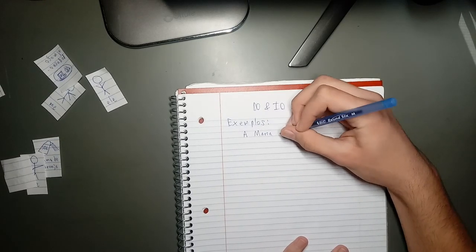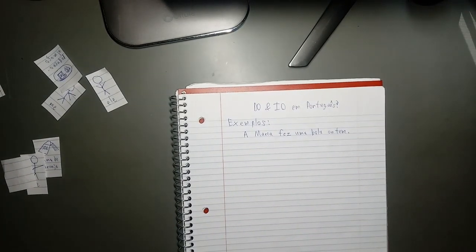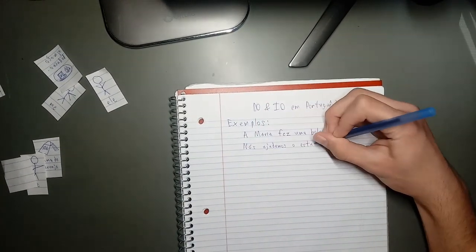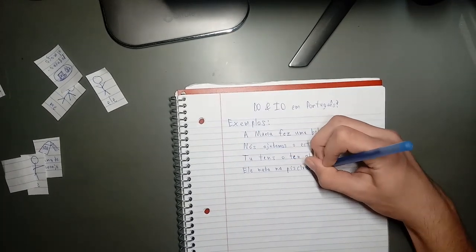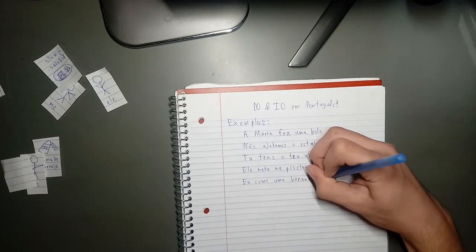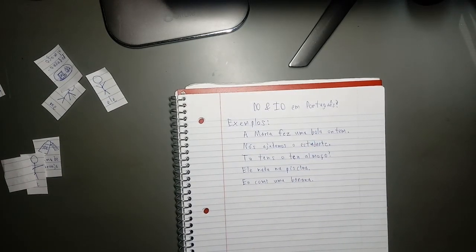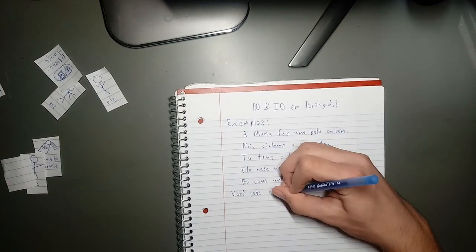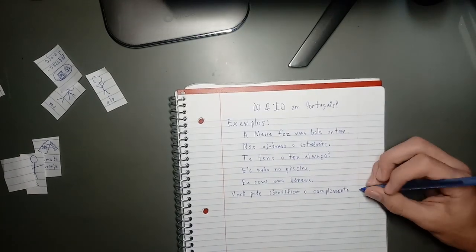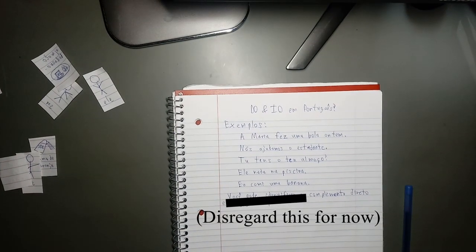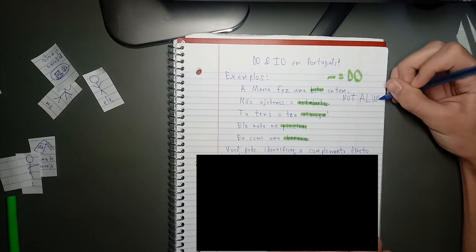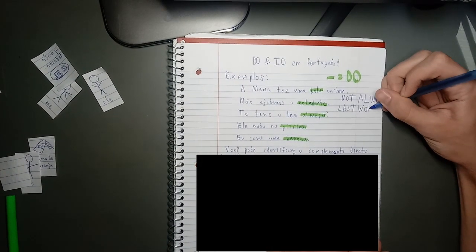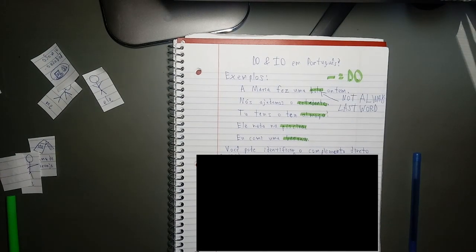Here are some examples of Portuguese sentences with direct objects. A Maria fez uma bola ontem. Nós ajudamos o estudante. Tu trazes o teu almoço? Ela nada na piscina. Eu comi uma banana. Pause here. Você pode identificar o complemento direto. Here are the answers for those. Remember that the direct object won't always be the last word or words in the sentence. You need to look for the meaning of the words in each sentence.